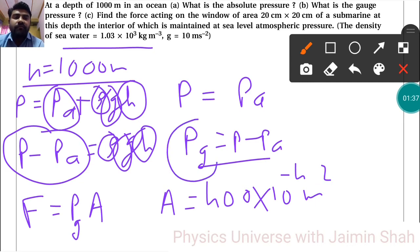So gauge pressure we found earlier, by putting that value here, A value here, multiplication of those values we will get force in Newton. So that is our answer.